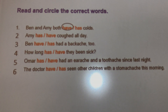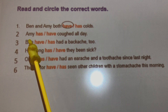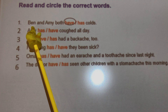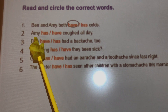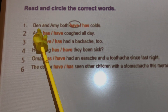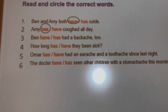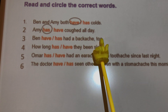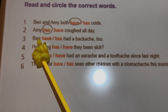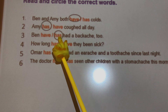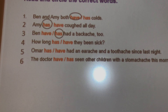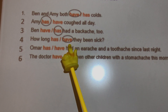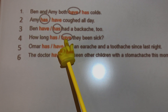Let's check answers together. Number 2: Be careful — the subject is Emmy. Emmy means 'she', and she takes 'has'. Number 3: 'Ben have or has had a backache too?' Ben means 'he', and he takes 'has'. Number 4: 'How long has or have they been sick?' Here we have 'they', so we circle 'have'. Correct.